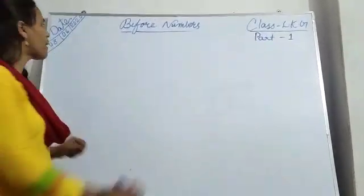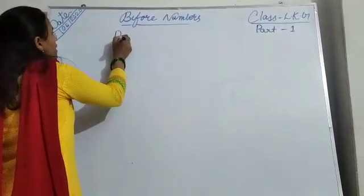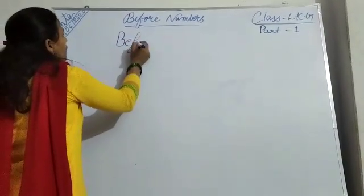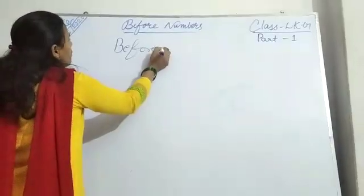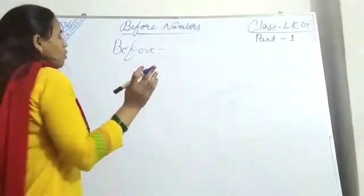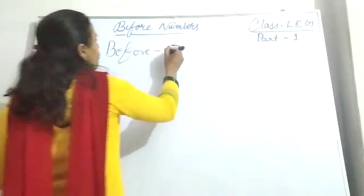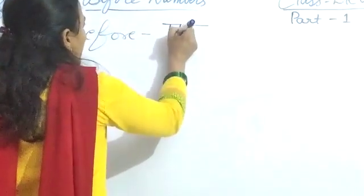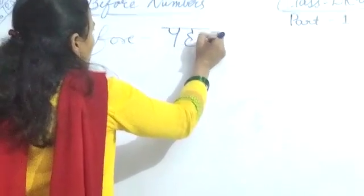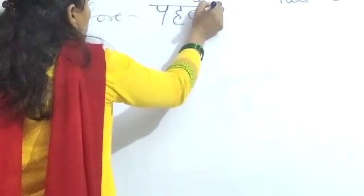Okay. What is that spelling before? B-E-F-O-R-E. Before. Before means? What is the before meaning? Before means pahale. B-E-F-O-R-E. Before means pahale. Okay.